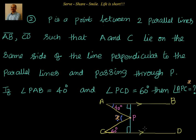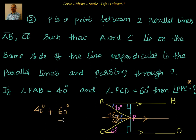Otherwise, what you can do is draw another line passing through P parallel to those two lines. Then by alternate interior angles, you know the part of the angle here is 40 degrees and the part on the other side is 60 degrees, so the total angle will be nothing but 40 plus 60, which equals 100 degrees. This is a straightforward NCERT textbook type of problem.